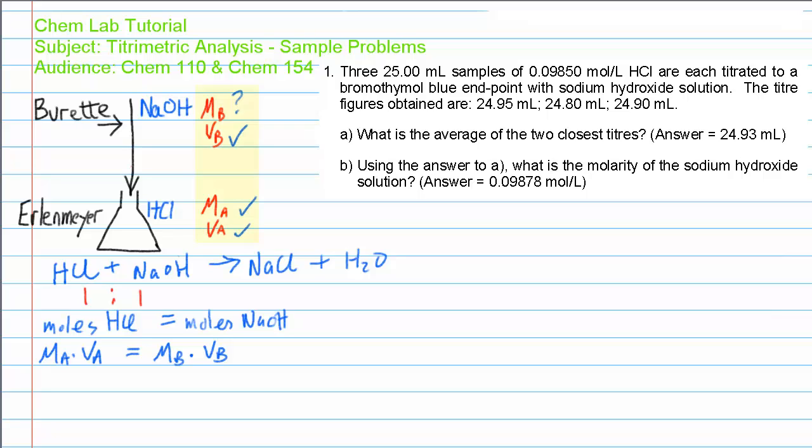Do remember that out of these four quantities, MA, VA, MB, VB, there's only one which we do not know. MB, that's what we're trying to find out, the molarity of the base.